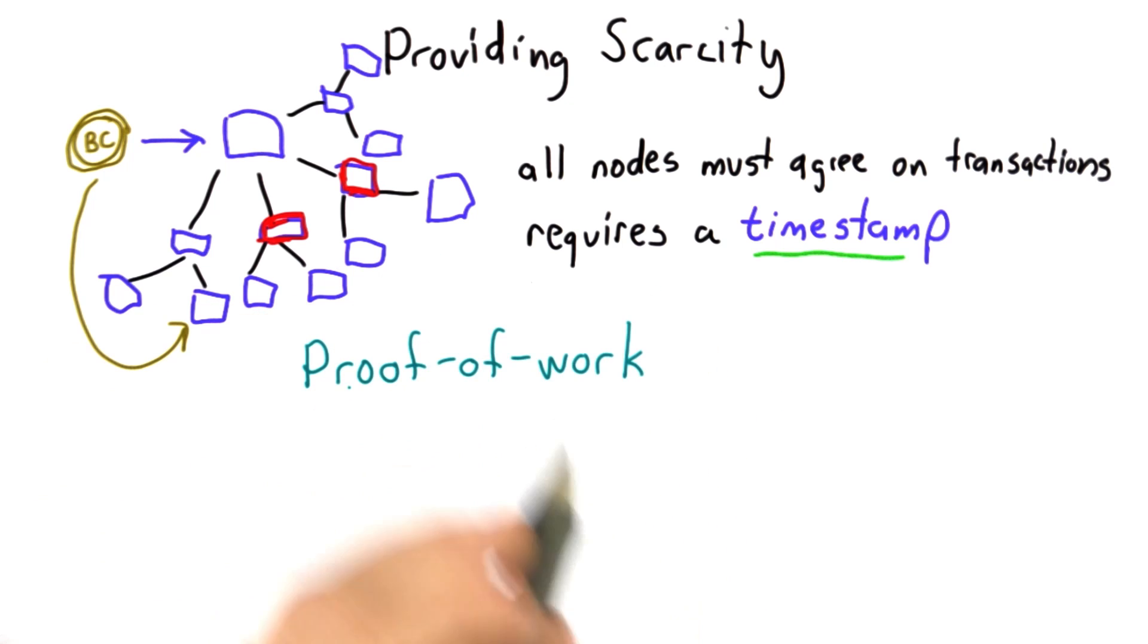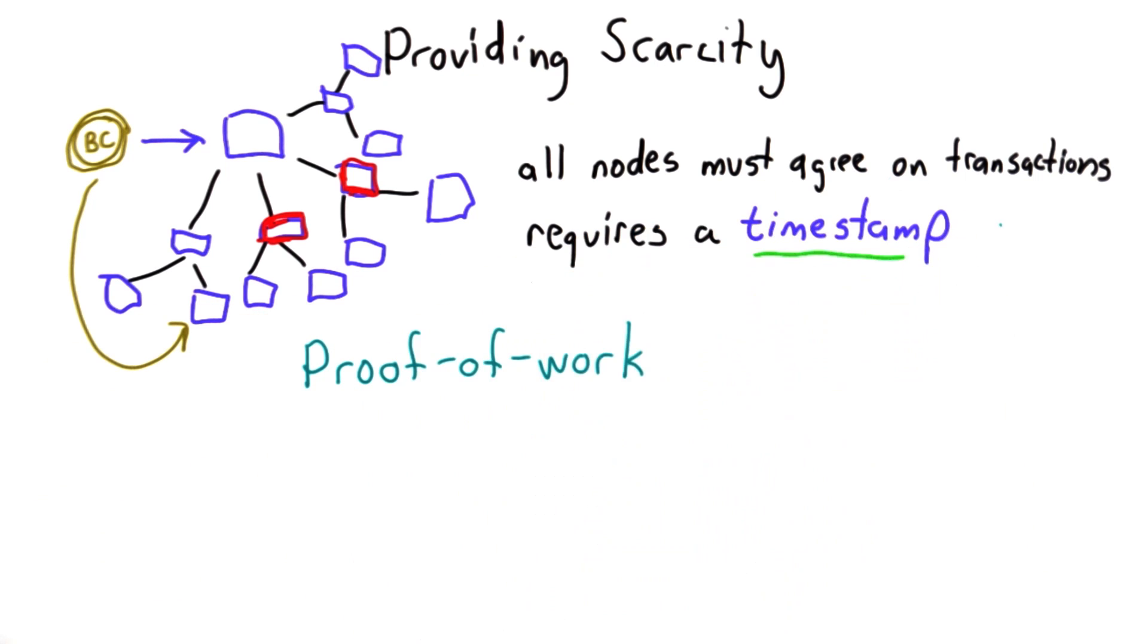If it requires enough work to increase the timestamp, then it's unlikely that a malicious user can increase the timestamp faster than the whole network. So how do we make that hard? We need some kind of proof of work to be embedded in the timestamps.